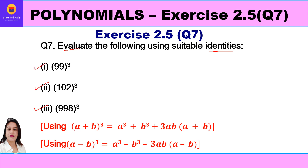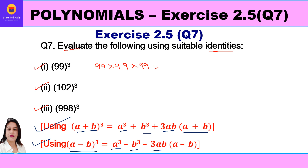To solve 99 cubed without using identities, we would simply multiply 99 three times and find the product. But it will be easier and more comfortable if we use identities. Since it's a cube, we will use the cubic identities: (a + b)³ = a³ + b³ + 3ab(a + b), and (a - b)³ = a³ - b³ - 3ab(a - b). These are the two identities we are going to use.